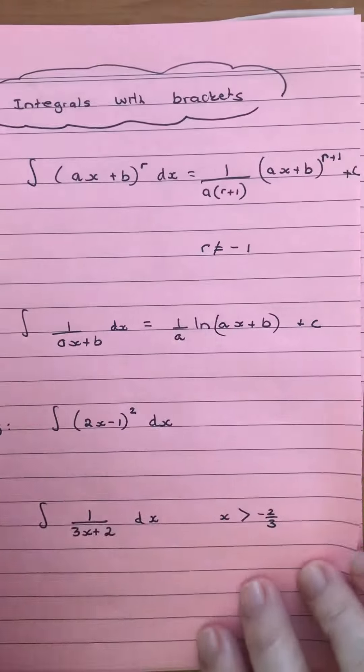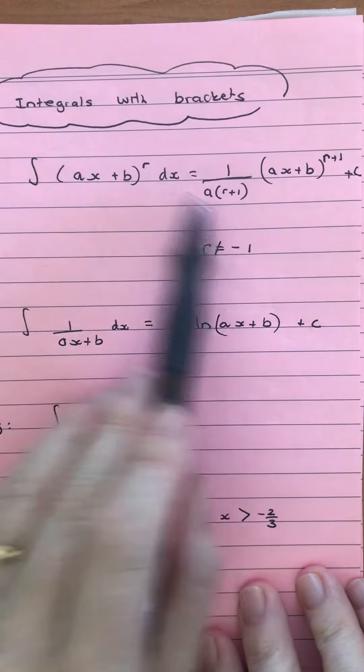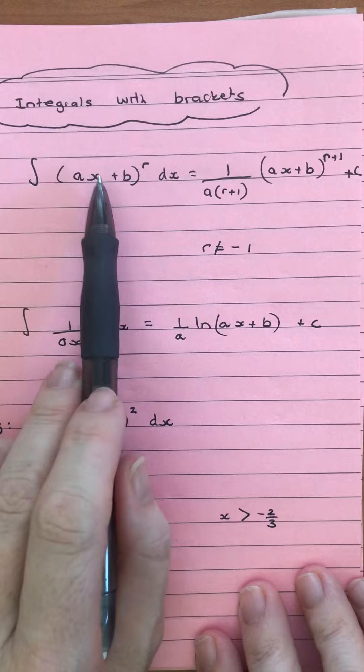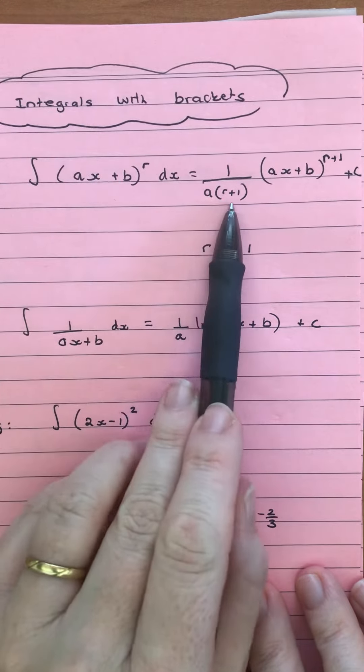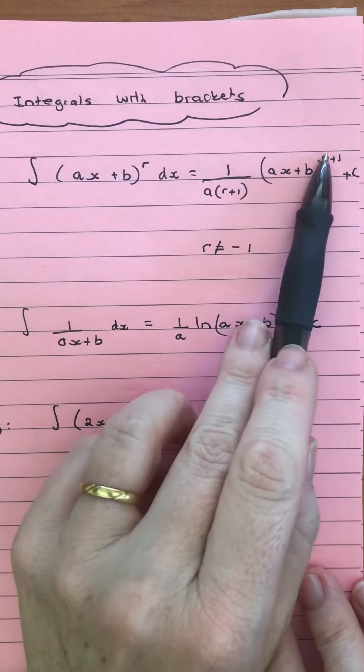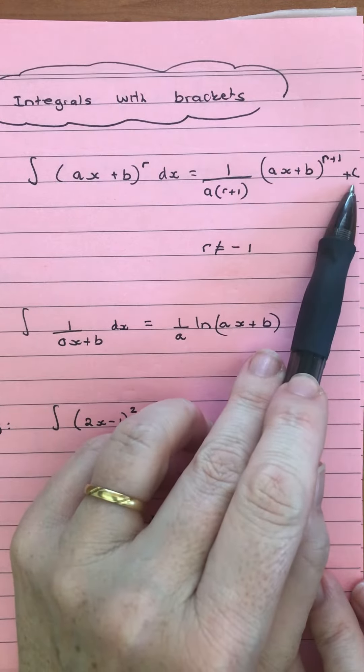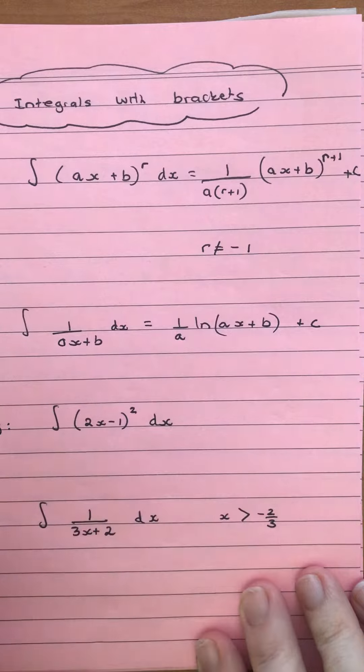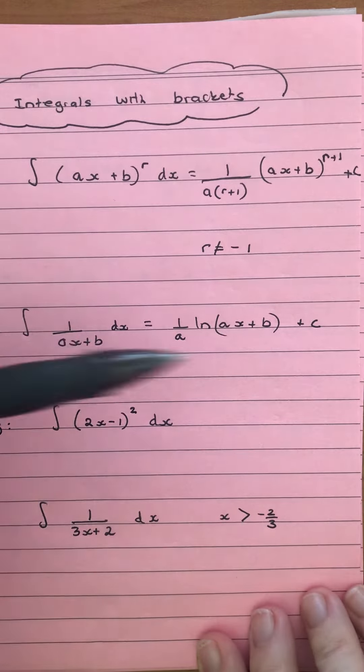What we're going to do is 1 over a, so that's from here, assuming that's a linear inside. Then a outside of r plus 1, and our ax plus b stays the same in that bracket, raised to r plus 1 plus c. Now r cannot equal negative 1, and I'll show you how to do that in a second.